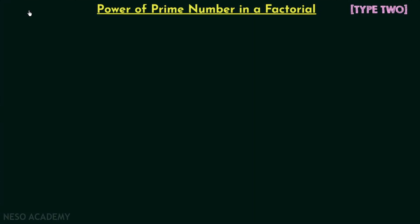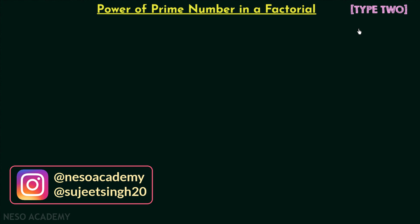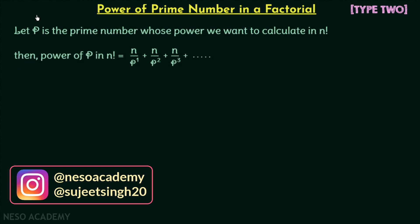In this lecture we are going to understand the formula to find out the highest power of a prime number in the given factorial. This is type 2 of the problems asked in the examination from the chapter number systems. Let's say p is the prime number whose highest power we want to calculate in n factorial.